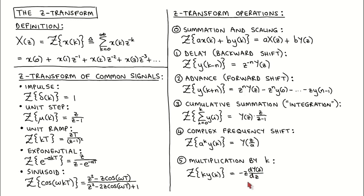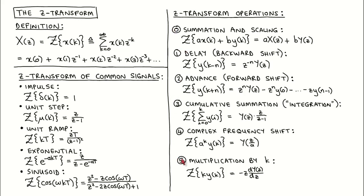We will see that we use properties 0 to 2 very often, whereas we use the other properties less often. To illustrate the Z-Transform and its properties, let's work through a few simple examples.